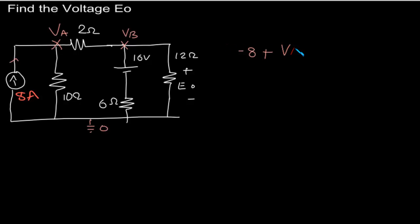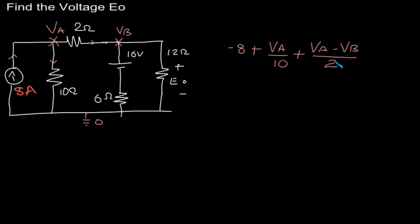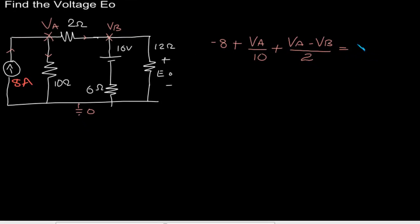That means Va by 10 is the current in this direction, and now the current in this direction will be Va minus Vb by 2 ohms. It will be equal to zero according to KCL. This will be our first equation.